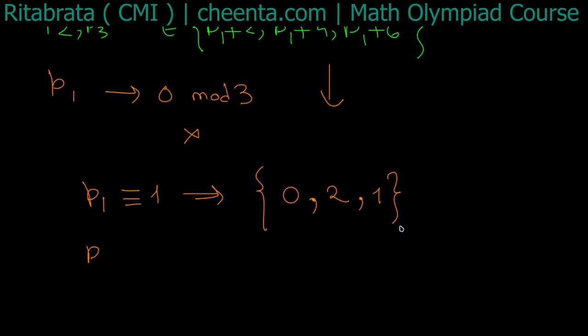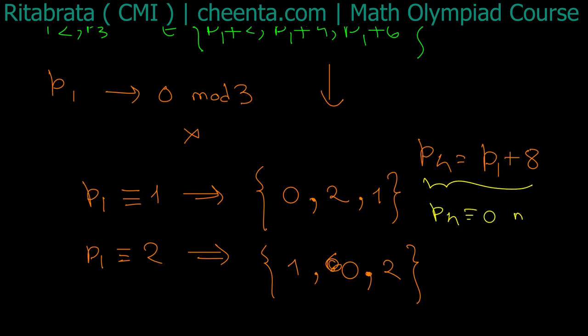Can p1 be 2 modulo 3? p1 congruent to 2 modulo 3 implies p1 + 2 is congruent to 1, p1 + 4 is 0 modulo 3, and p1 + 6 is 2 modulo 3. It's okay, but we also have p4 equal to p1 + 8. If p1 is congruent to 1, that would mean p4 is congruent to 1 + 8 = 9, so that means p4 congruent to 0 modulo 3. But p4 is a prime bigger than 3, so it can never be congruent to 0 modulo 3. So p1 congruent to 1 modulo 3 is not possible.